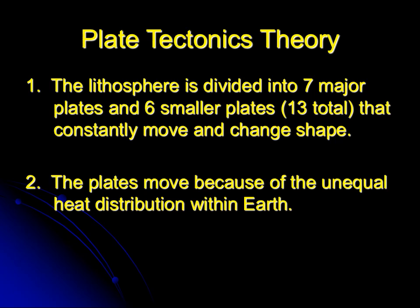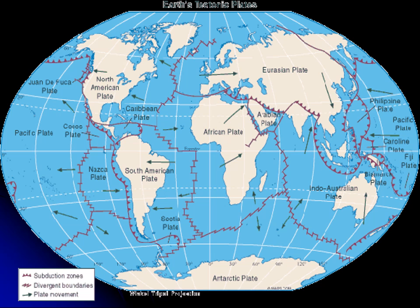The plates are moving because of unequal heat distribution — there's not the same amount of heat all over earth, which makes the plates move. This diagram shows you the plate movement. If you look at the key in the bottom left, the squiggly line represents divergent boundaries, where plates are moving apart.